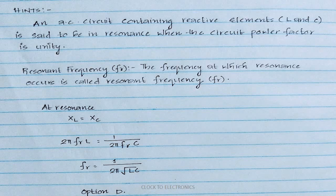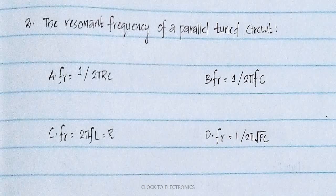The circuit power factor is unity — that is the voltage and current are in phase. So the resonance frequency is where inductive reactance equals capacitive reactance: 2π·FR·L = 1 / (2π·FR·C), which gives FR = 1 / (2π√LC). So option D, FR = 1 / (2π√LC), is the answer.